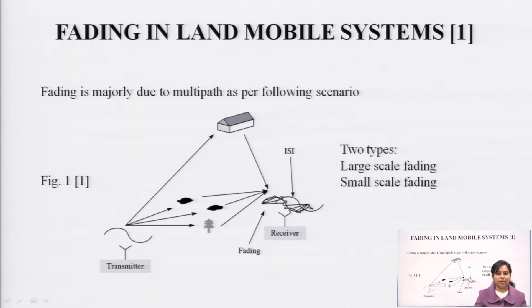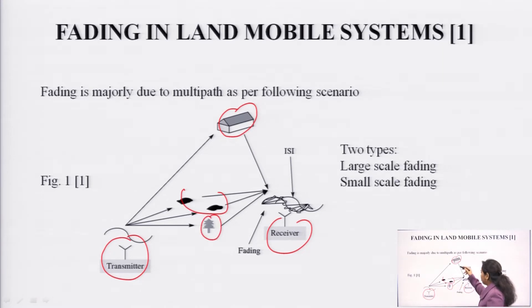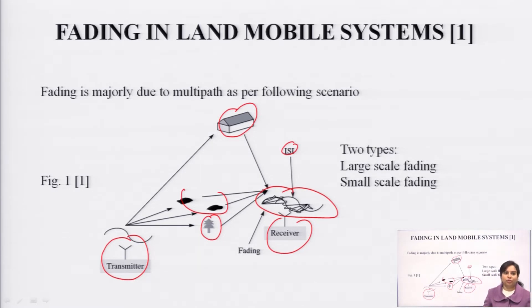Fading exists in multipath propagation, because in urban areas and suburban areas there is no direct line of sight between the transmitter and receiver. There will be buildings, hills, and other intermediate nodes. The signal will be received from multiple paths, and you can see that the received signal has ISI, that is inter-symbol interference, and it is much more distorted compared to the original signal. Its characteristics are totally changed — that is known as fading.